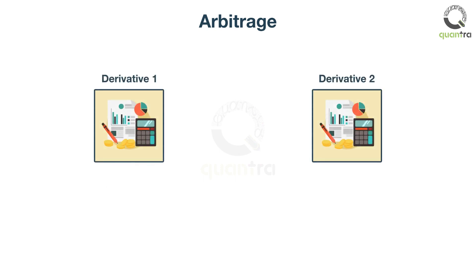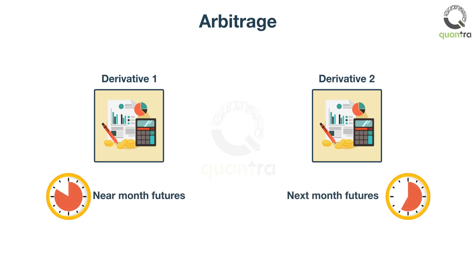On the same lines, arbitrage opportunities can also be found between two derivative products on the same underlying security. For example, the arbitrage between the near-month futures contract and the next-month futures contract. This is known as futures-to-futures arbitrage.